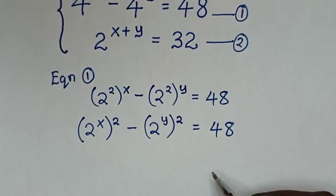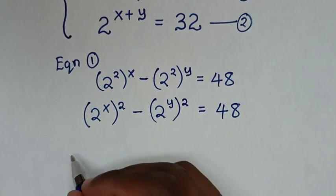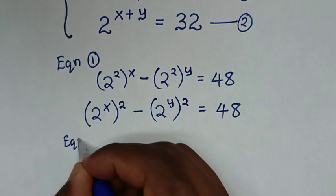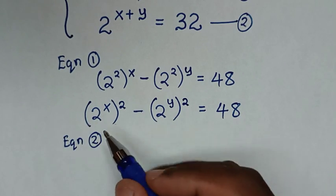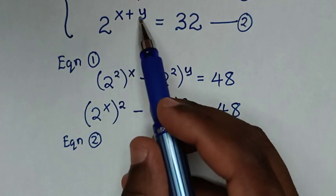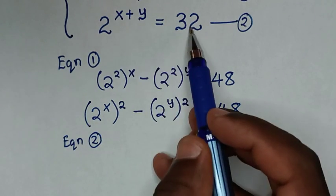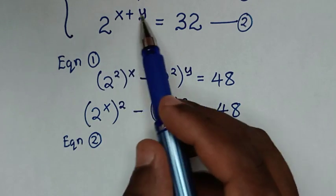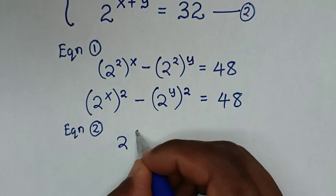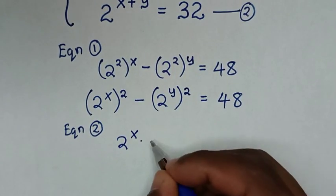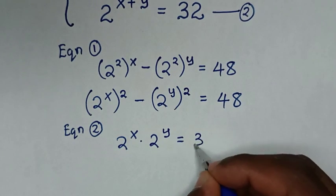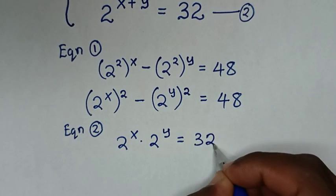Then in the next step, from equation 2, which is 2 power of x plus y is equal to 32, we expand using exponent rules: 2 power of x plus y is the same as 2 power of x times 2 power of y, which equals 32.